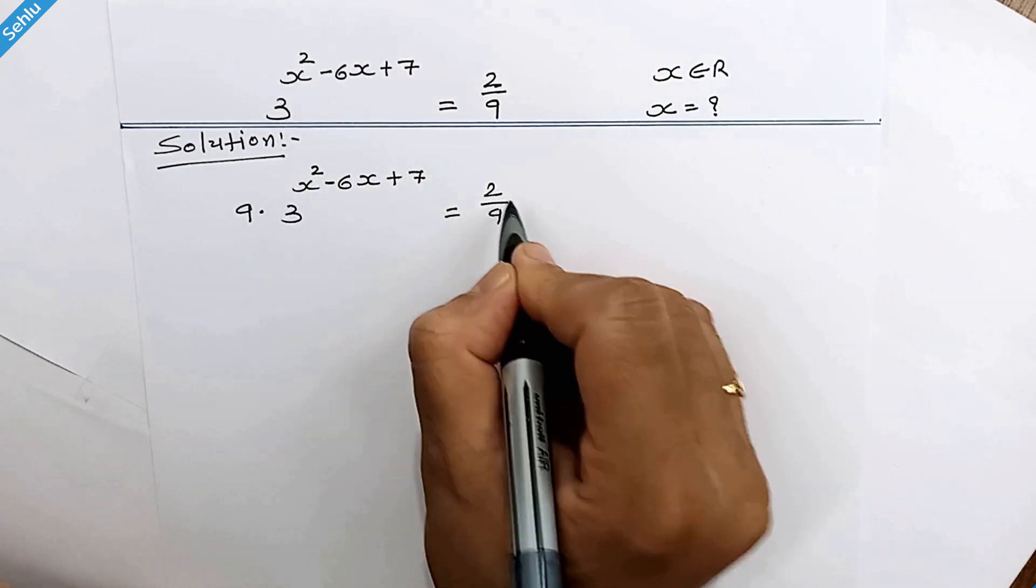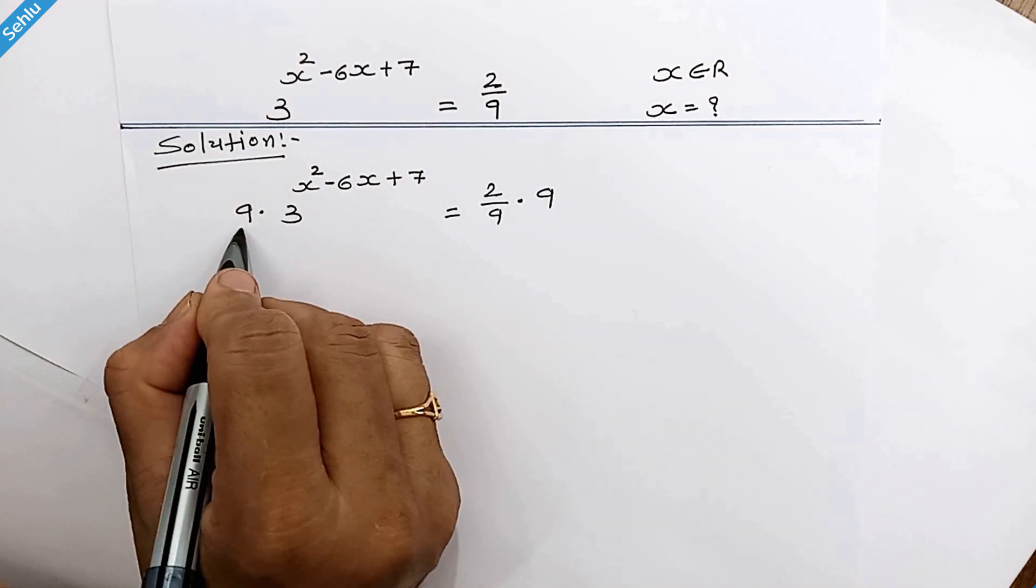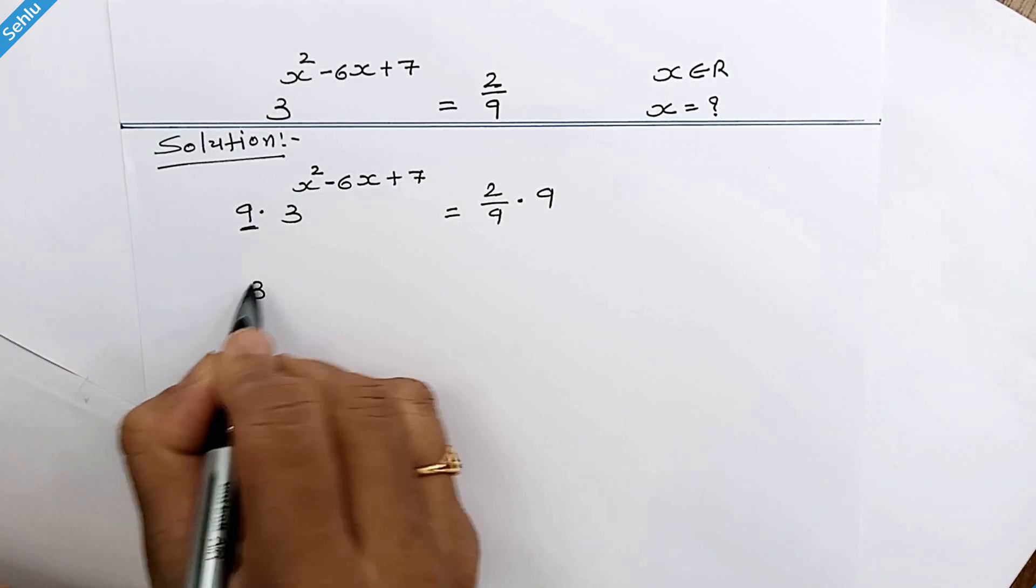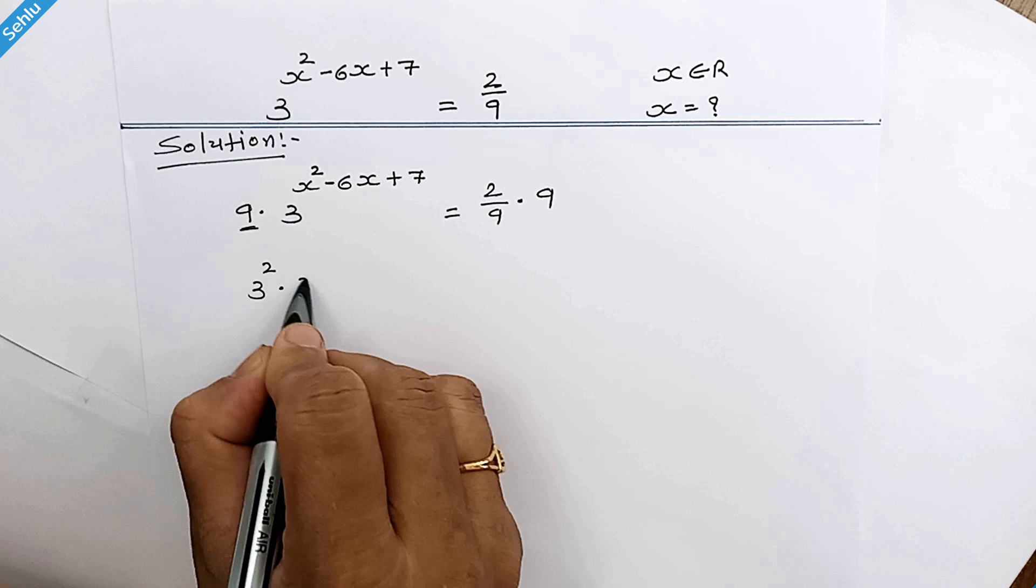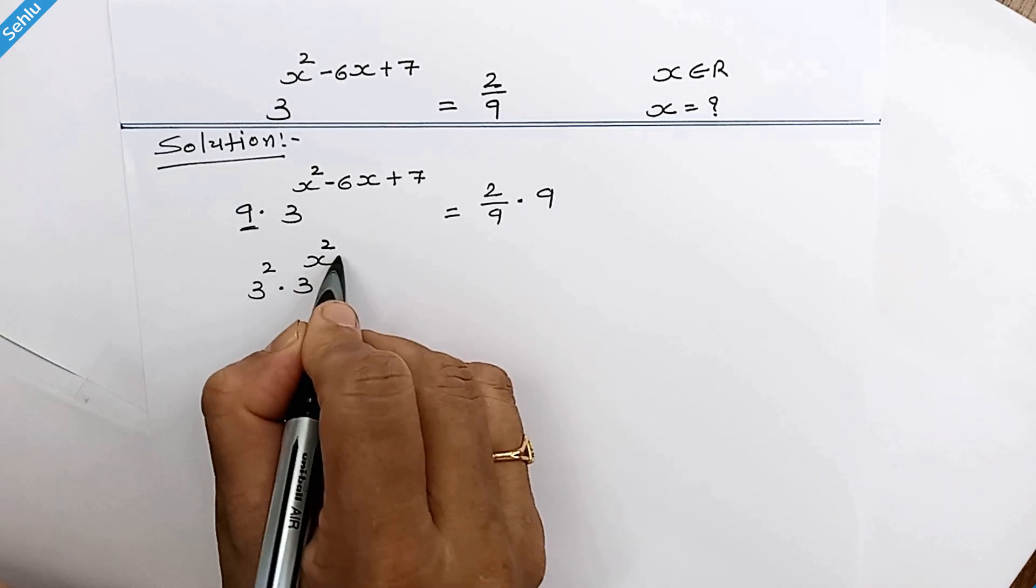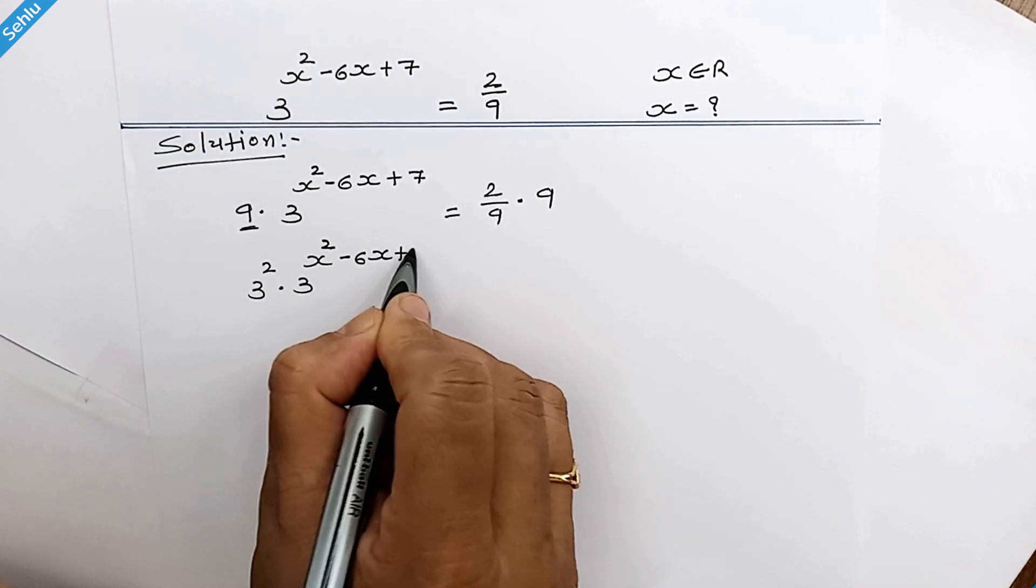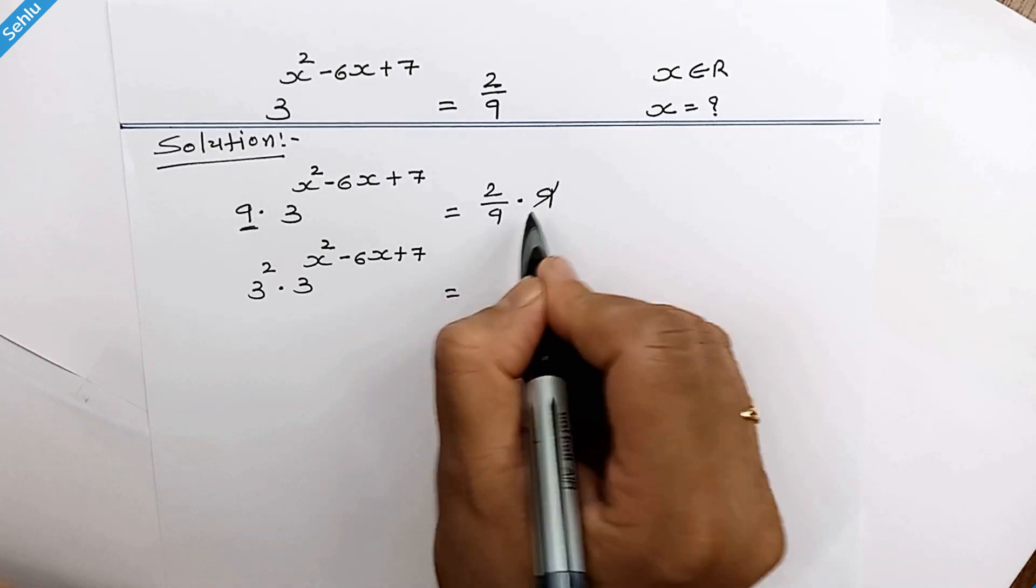We will multiply by 9 on both sides. 9 is 3², so we can put 3² in place of 9. And here we have 2.